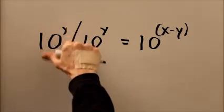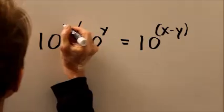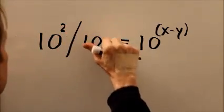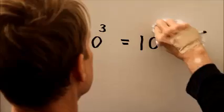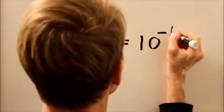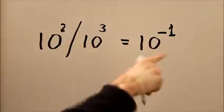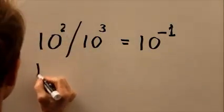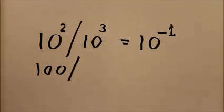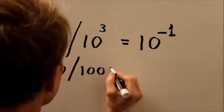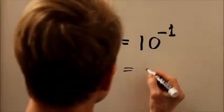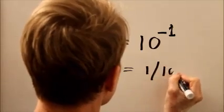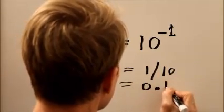Let's provide an example. 10 squared divided by 10 cubed equals 10 to the 2 minus 3 or 10 to the minus 1. If we expand that out, 10 squared is a hundred, 10 cubed is a thousand, and 10 to the minus 1 is 1 over 10 or 1 tenth.